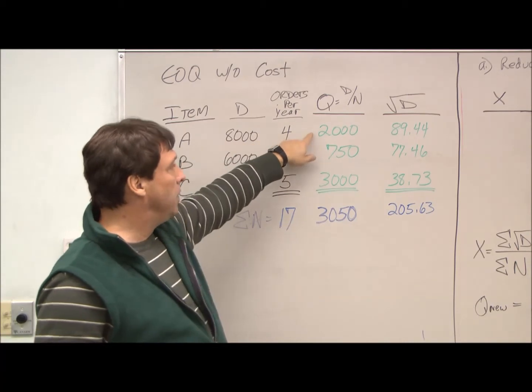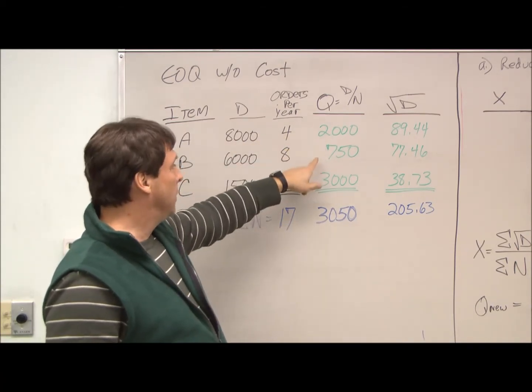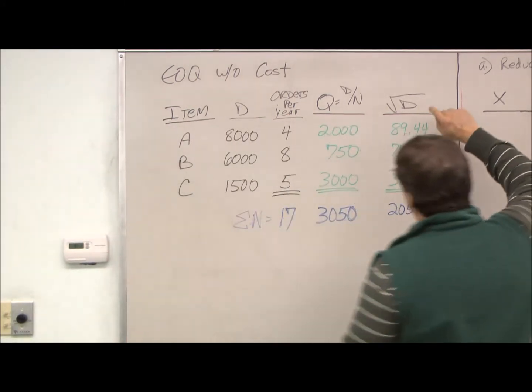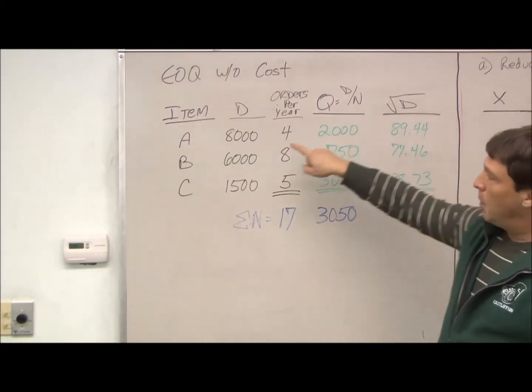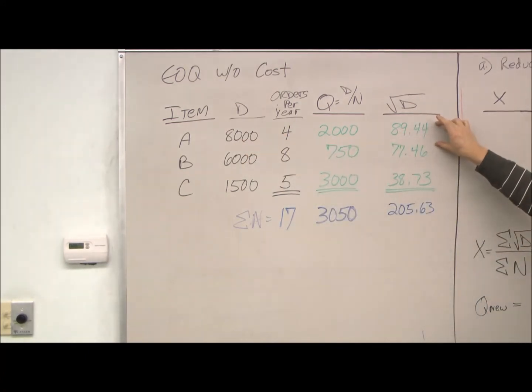So, 8,000 divided by 4 is 2,000. Similarly for item B and item C. Over here, we just take the square root of D. So, the square root of 8,000 is 89.44.